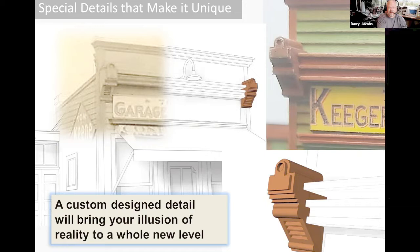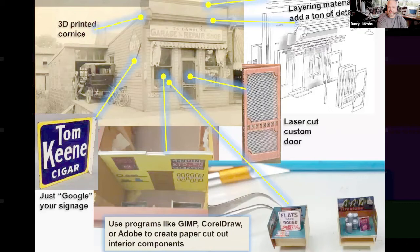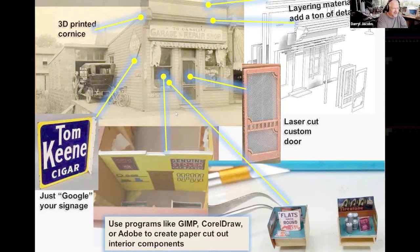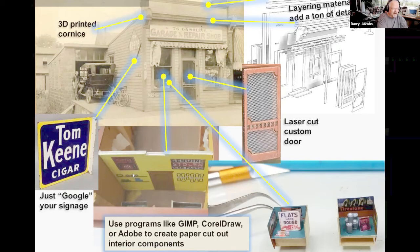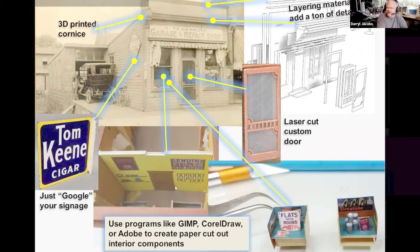Creating the illusion of what's actually there — we laser cut a custom door for it. The front panel of the building has a lot of features to it. In the upper right-hand corner you can see that layering the material can add a ton of detail as well — instead of just one strip for corner trim or upper trim, layering it together in different sizes will bring that illusion together quite nicely. Of course you can Google signage and come up with just about anything on the internet, then take it into programs like GIMP, CorelDraw, or Adobe to cut and create paper signs. For a simple interior you can use those same programs to print onto a piece of paper. As long as you offset that from the front of your building and don't put it right behind the window, it gives you an illusion of depth and activity inside.